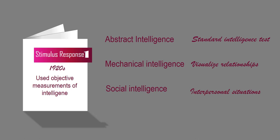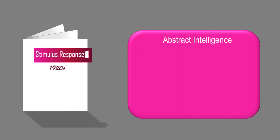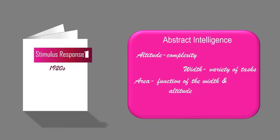He proposed that abstract intelligence has four dimensions: altitude, or the complexity or difficulty of tasks one can perform; width, or the variety of tasks of a given difficulty; area, which is the function of width and altitude; and speed, which is the number of tasks one can complete in a given time.